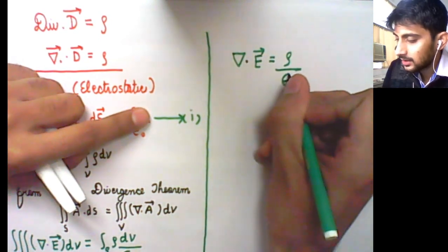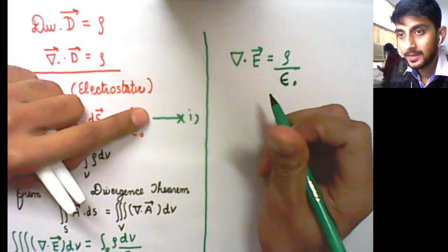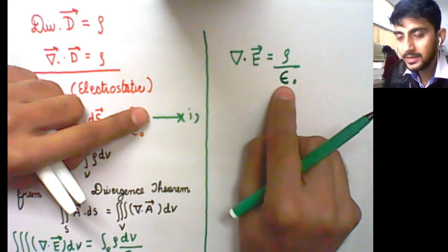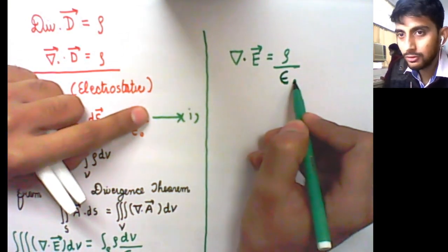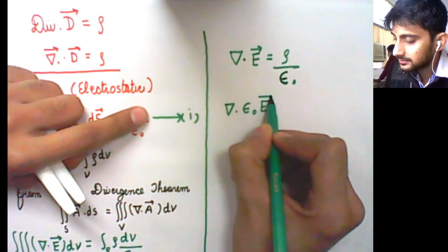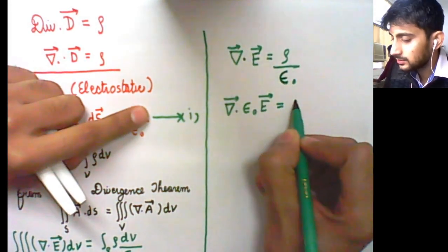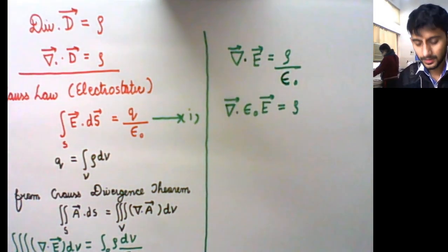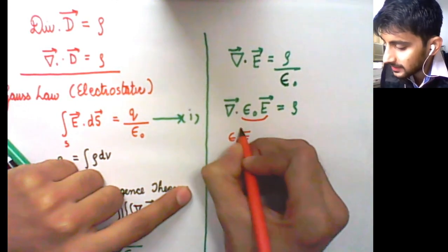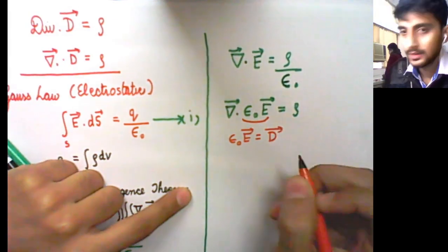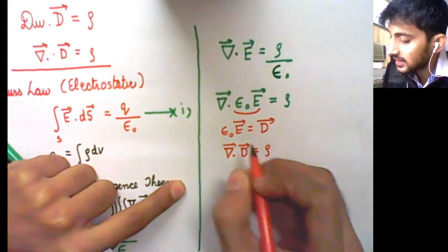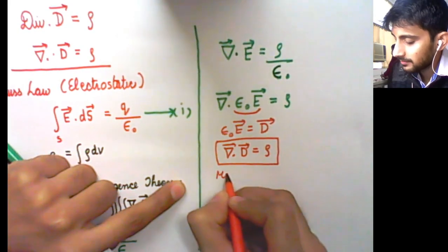But if we have a homogeneous material where permittivity is the same in all directions, we can multiply epsilon naught with the electric field. Epsilon naught times E is nothing but the electric displacement vector D. Therefore, we get divergence of electric displacement vector D equals the charge density rho — and this is Maxwell's first equation.